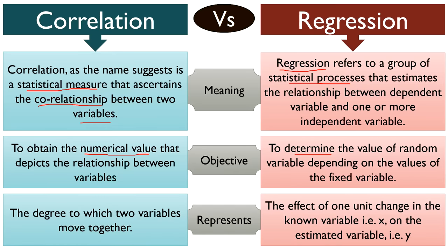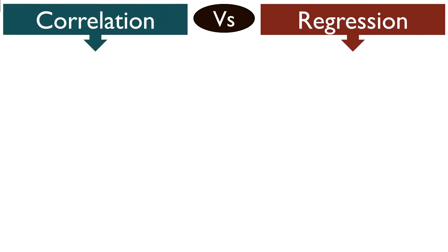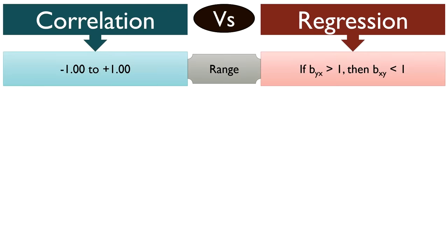Correlation represents the degree to which two variables move together, whereas regression represents the effect of one unit change in the known variable x on the estimated variable y. The correlation coefficient can range from minus 1 to plus 1, whereas if the regression coefficient of y on x is greater than 1, then the regression coefficient of x on y is less than 1.